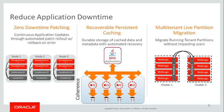Coherence 12.2.1 provides recoverable, persistent caching — the ability of cached data and metadata to be stored in durable storage. On the failure of one server in the Coherence cluster, or the entire Coherence cluster, the ability to very quickly, in an automated fashion, recover that cached data with zero impact to applications.